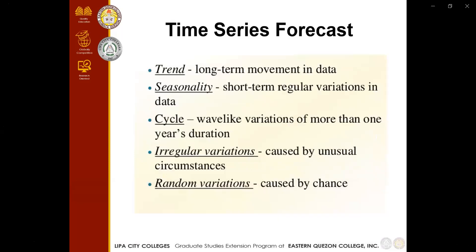For the time series forecast, we have the following components: Trend — a long-term movement in data. Seasonality — short-term regular variations in data. Cycle — wave-like variations of more than one year's duration. Irregular variations — caused by unusual circumstances. And random variations — caused by chance.